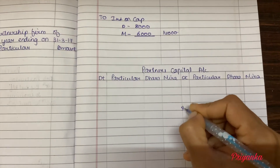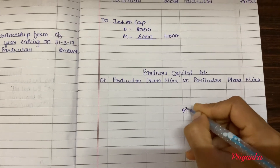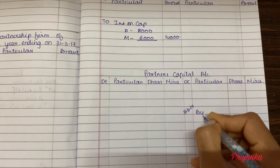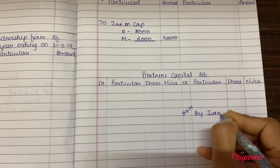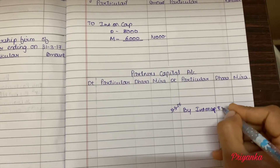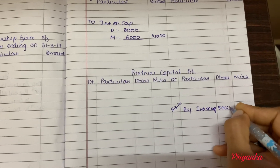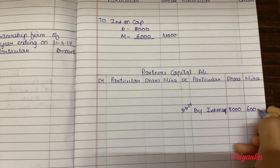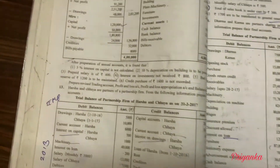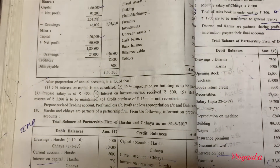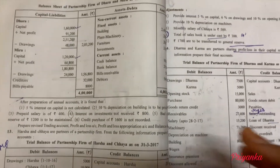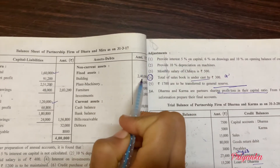Dated 31st March 2017, in their respective columns — six thousand. Next adjustment: ten percent depreciation on the building is to be provided. Here the building amount is two lakh forty thousand; just take it into your asset column.